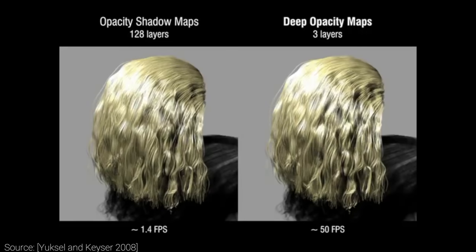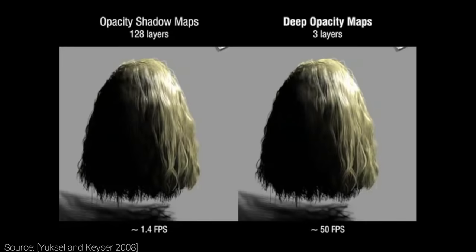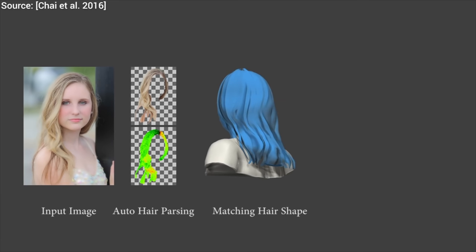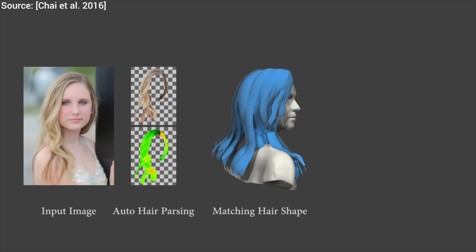And even then, we are not done, because before that, we have to take a step back and somehow create these digital 3D models that show us the geometry of these flamboyant hairstyles. Approximately 300 episodes ago, we talked about a technique that took a photograph as an input and created a digital 3D model that we can use in our simulations and rendering systems.